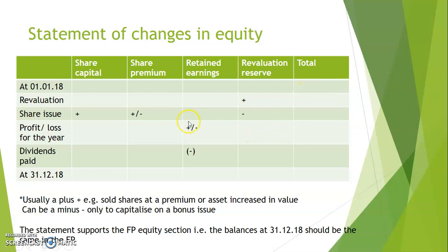The statement of changes in equity shows equity — which is ordinary shares, share premium, retained earnings (which is profit from previous years), and revaluation reserve. Ordinary shares is the nominal value; share premium is anything sold above par. For example, if you sell a share for 25p and the nominal value is 20p, the 20p goes into ordinary shares and the 5p goes into share premium — don't put 25p in there, it must be split.